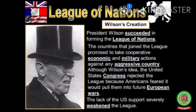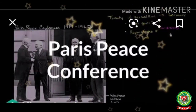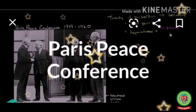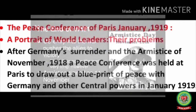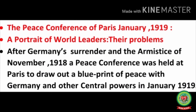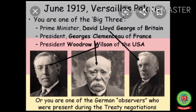Let's discuss the Paris Peace Conference of January 1919. After Germany's surrender and the armistice of November 1918, a peace conference was held at Paris to draw up a blueprint of peace with Germany and other central powers. Wilson's 14 Points were the background of the peace treaty. The three dominant leaders — the Big Three — played an important role in the Paris Peace Conference and in the Treaty of Versailles.